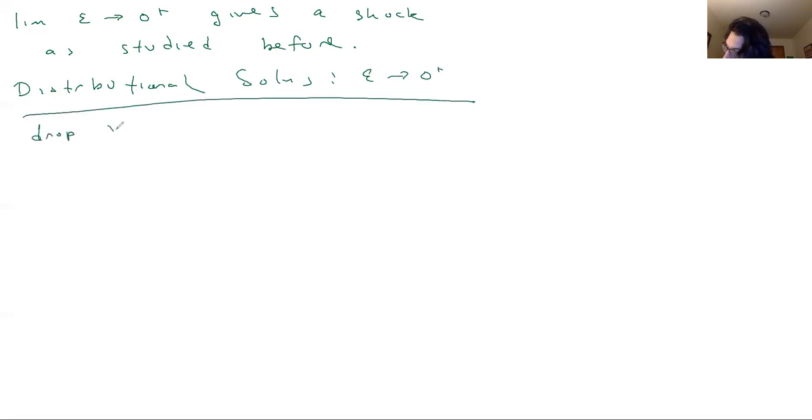So if we drop our viscosity, remember we have our inviscid Burgers equation. Well, straight away, let's just try for a traveling wave solution. So u of xt is equal to v of psi, where psi is equal to x minus st.